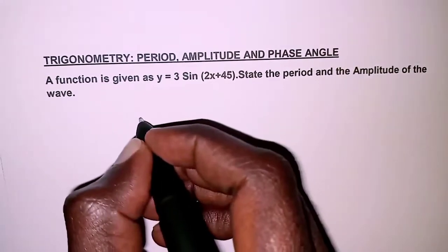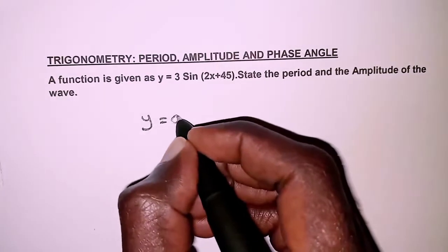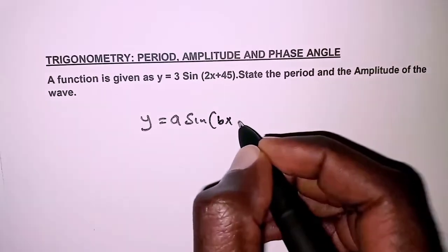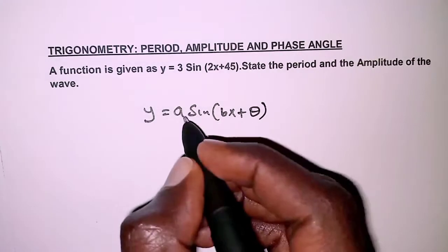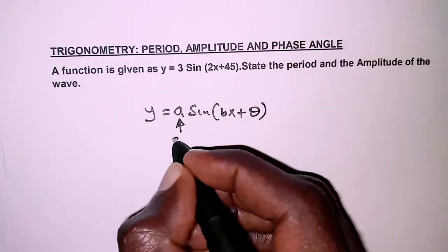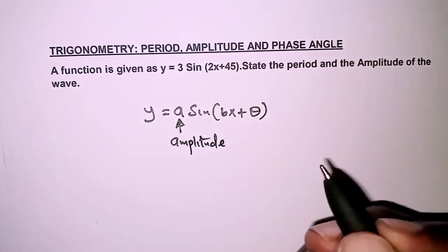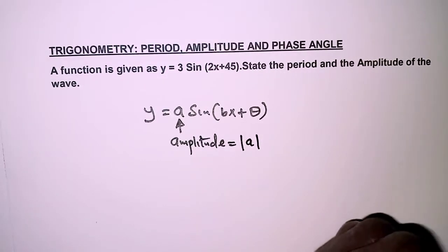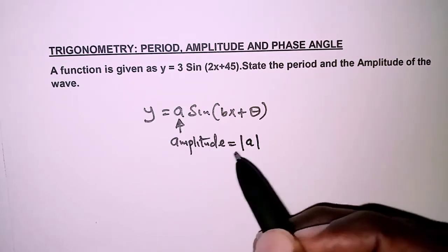So given a wave function a sin(bx + θ), then a represents the amplitude. We'll take the absolute value of a, so that if you have negative 2, we consider the positive value.